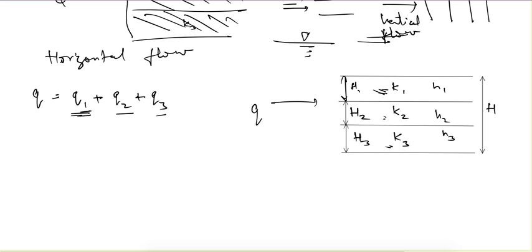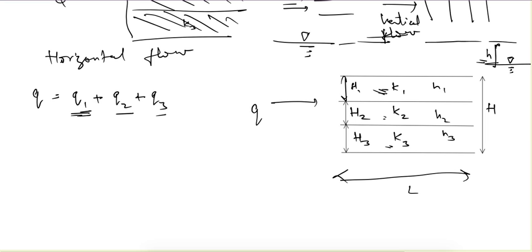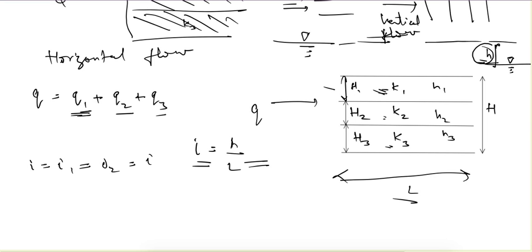What remains constant across the stratification is the hydraulic gradient. The water level on the left side and on the right side after head loss has occurred — the total head loss is h, and if this distance is L, the hydraulic gradient is h/L. This hydraulic gradient value is the same for all layers, so i equals i1 equals i2 equals i3.